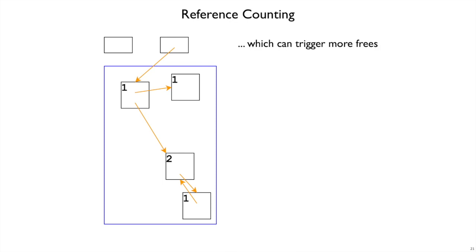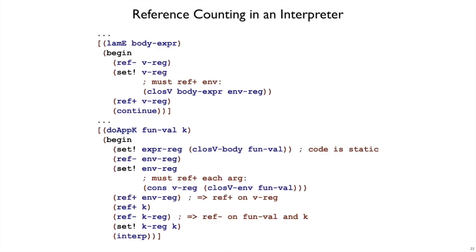So that's the basic idea of reference counting. We have to add a number to each object, and we have to take care every time we change a register or a value inside some other object that we have to update the count. And if we adapted our code to do this, then it would look something like this. So we're still using matching and constructors, but you'll be able to get the idea to see how these would turn into reference counting.